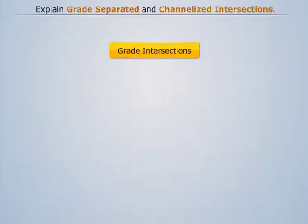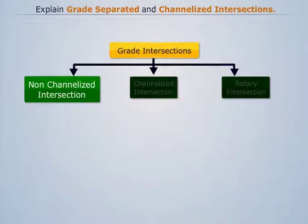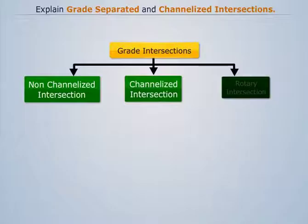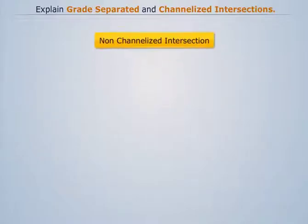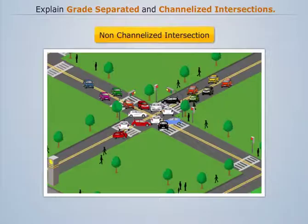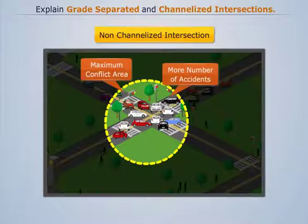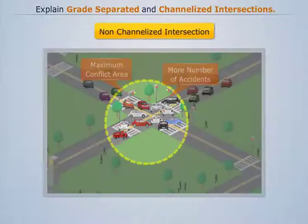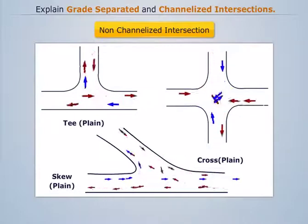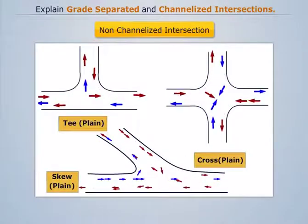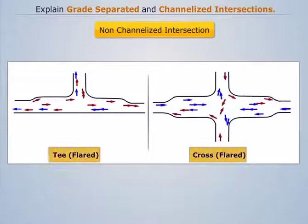These intersections are further classified as non-channelized and channelized intersections. In this section we will focus on these two types. In non-channelized intersections, there is no restriction for vehicles to use any part of the intersection area, thus resulting in maximum conflict area and more accidents. When no additional pavement width is provided for turning movement, it is called a plain intersection. When the pavement is widened at the intersection area, it is known as a flared intersection.